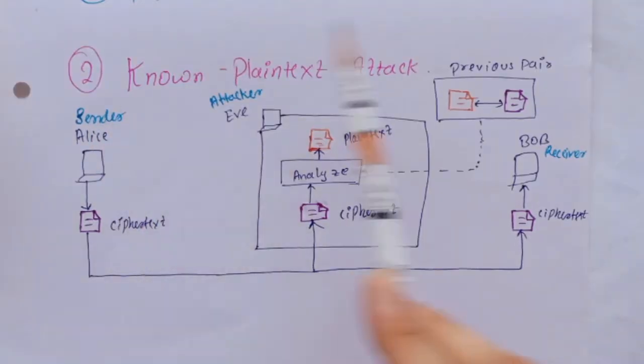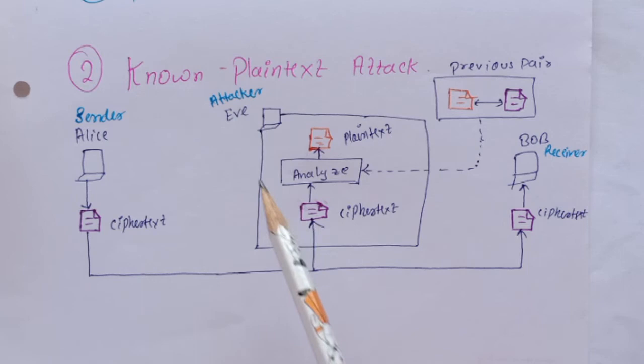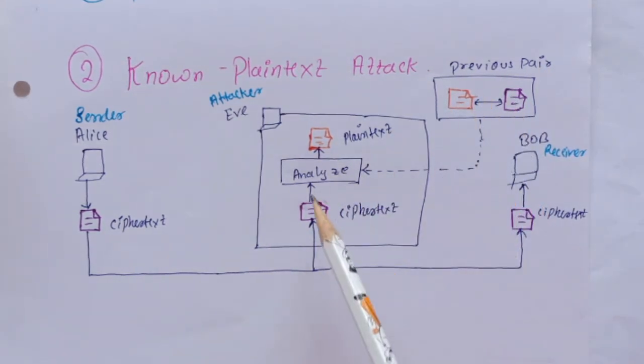Next we will see known plaintext attack. Here the intruder Eve has access to previous pairs of plain text and ciphertext. Also, Eve intercepted the ciphertext which she wants to break.